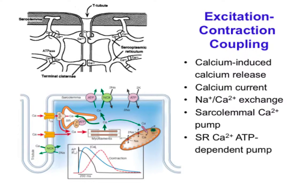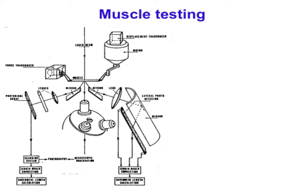That covers excitation-contraction coupling in cardiac muscle. Now, the final differences involve testing. Cardiac muscle is harder to test because skeletal muscles are thin, elongated, parallel-fibered, and come with conveniently attached tendons. You can get a frog or mouse muscle that's long, parallel-fibered, attach it to your apparatus and you're ready. You also can't have a control muscle since animals have two limbs but only one heart.